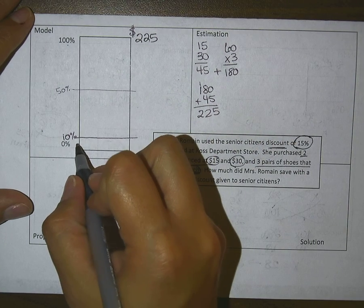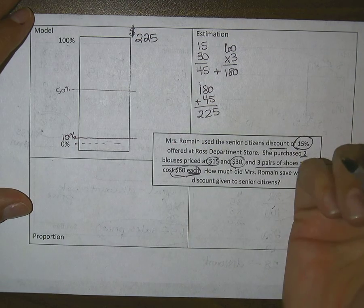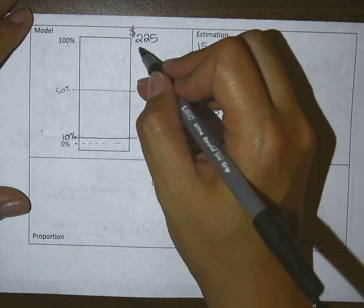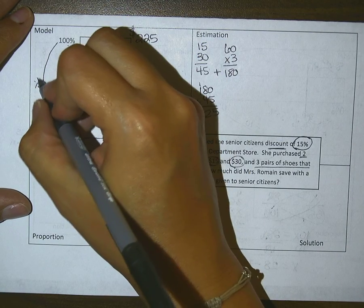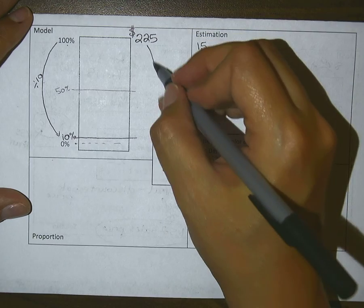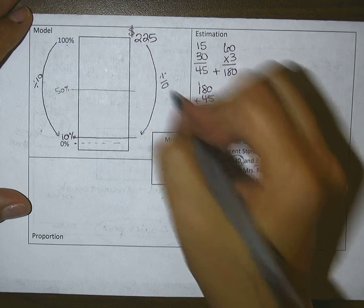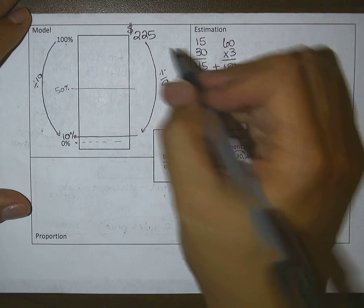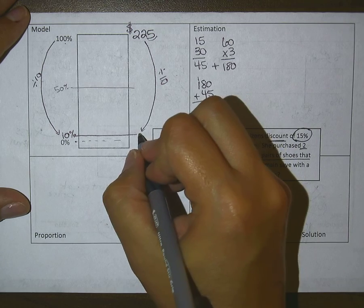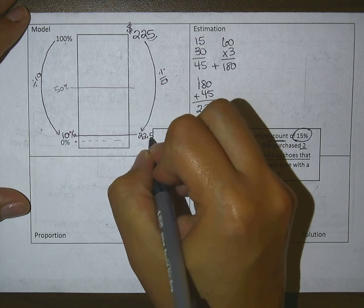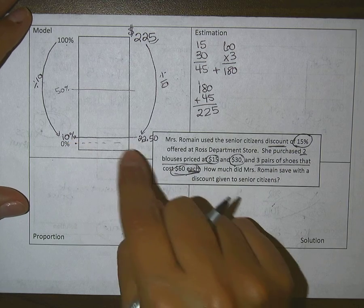After I find 10%, I could figure out what 5% was and add it together to get the 15% if I wanted to. So 100 to 10 is dividing by 10, so I would do the same thing here. I would take my $225 and divide by 10.